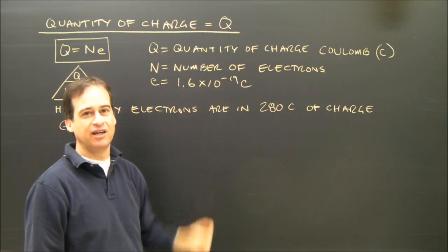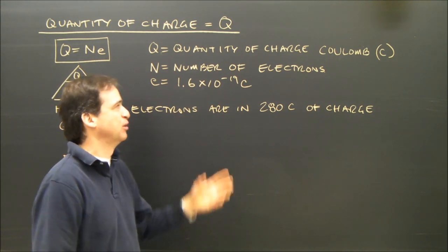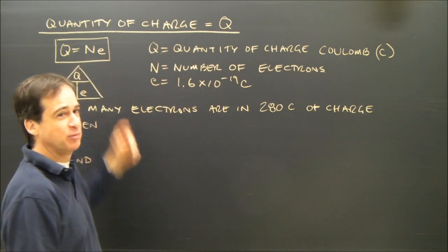1.6 times 10 to the negative 19 coulombs. So one electron has that many coulombs of charge. So two electrons would be two times that. That's where the formula comes from.